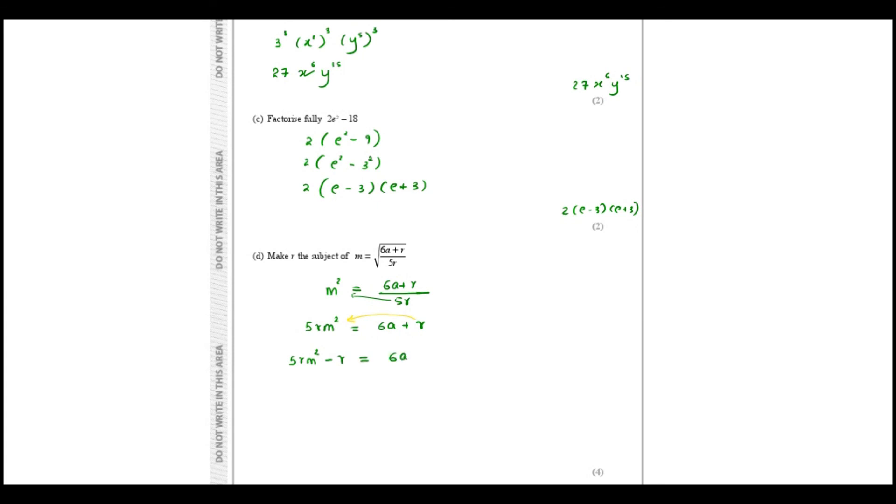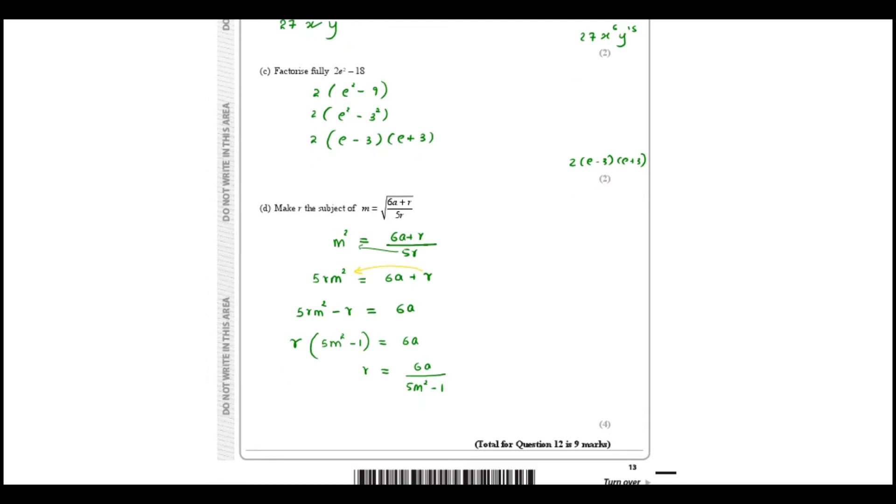Taking the common r out, I want to make r the subject, so r times 5m square minus 1 equals 6a. Now we can easily make r the subject: 6a divided by 5m square minus 1. So your answer is r equals 6a over 5m square minus 1.